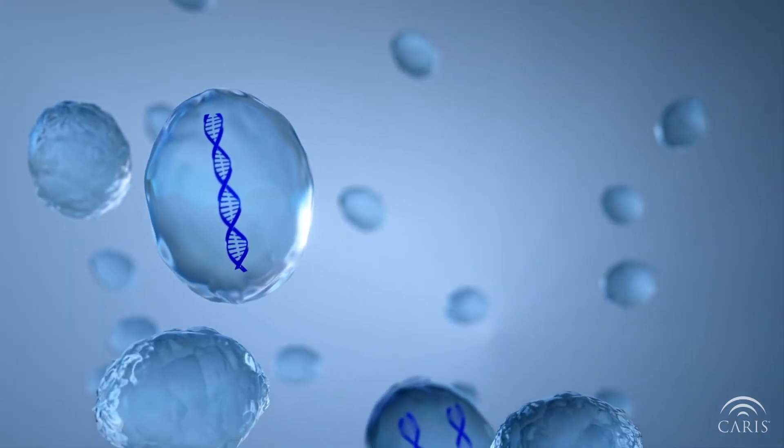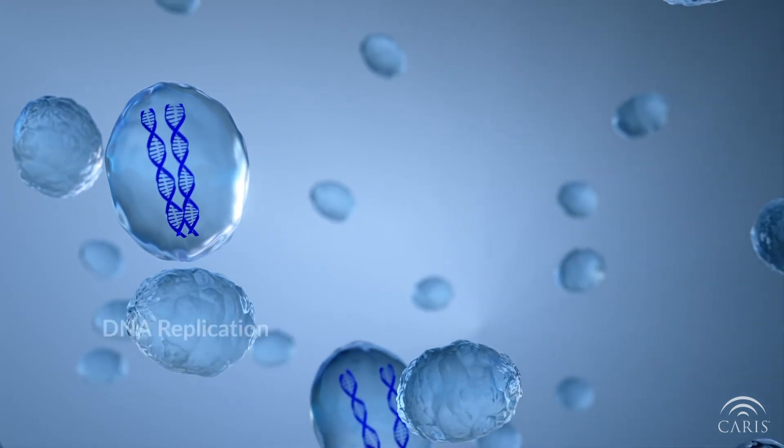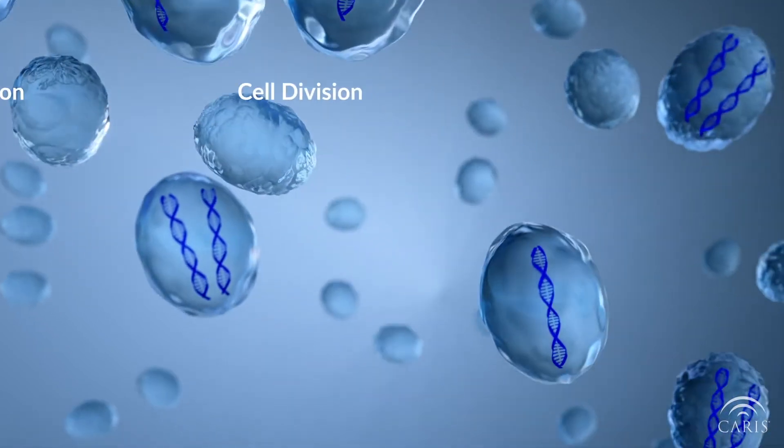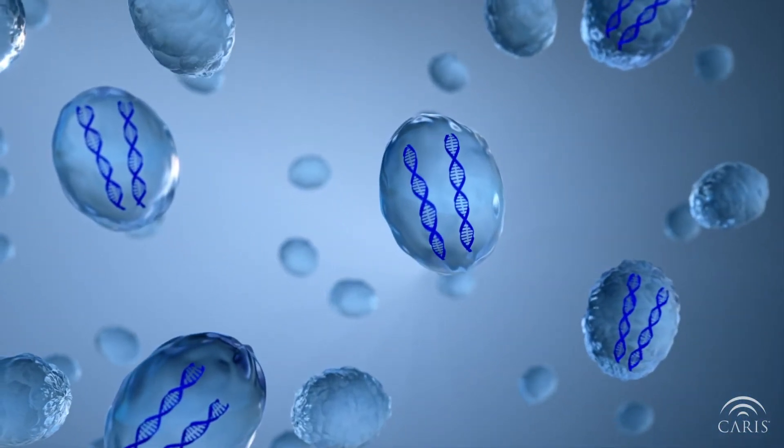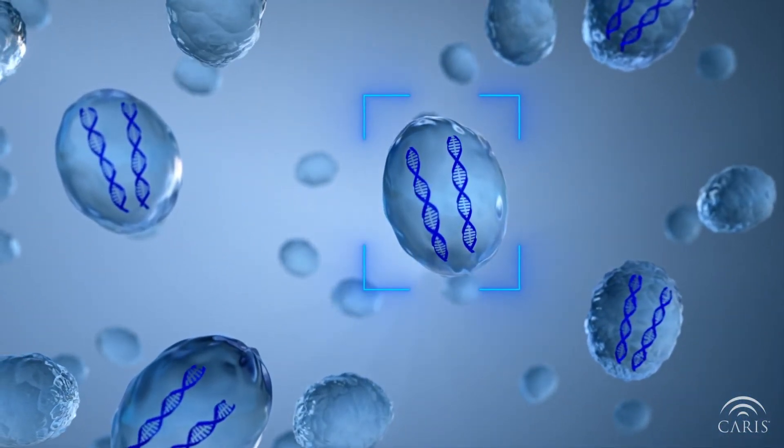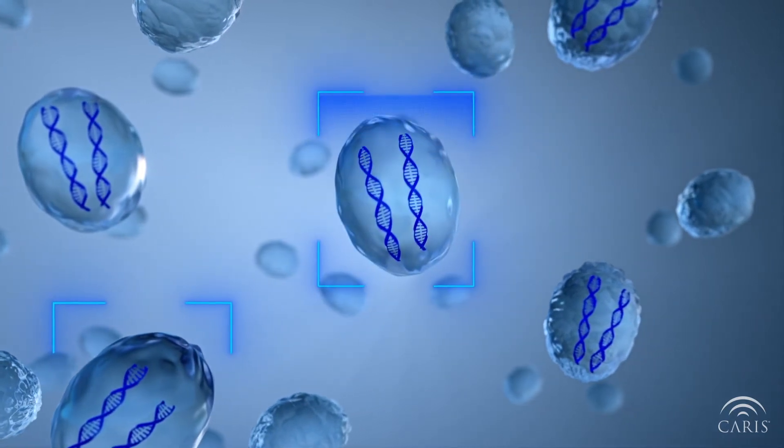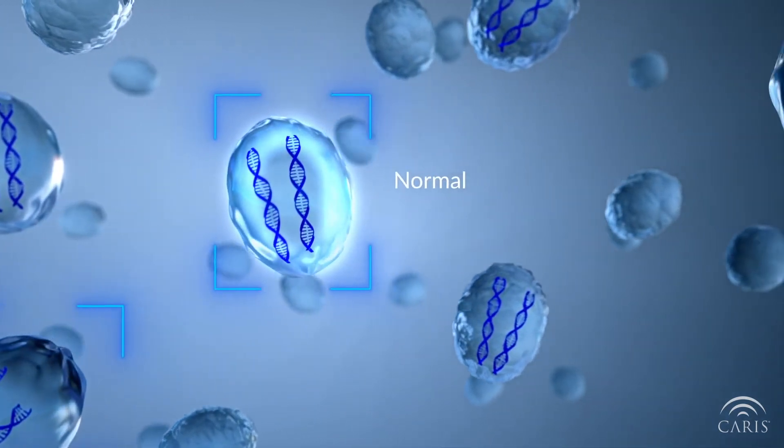Under normal circumstances, cell division begins by the cell copying its DNA and then splitting to form two daughter cells. As the DNA is copied, there are checkpoints and multiple surveillance mechanisms in place to proofread the DNA that is being copied to make sure it's exactly like the original.